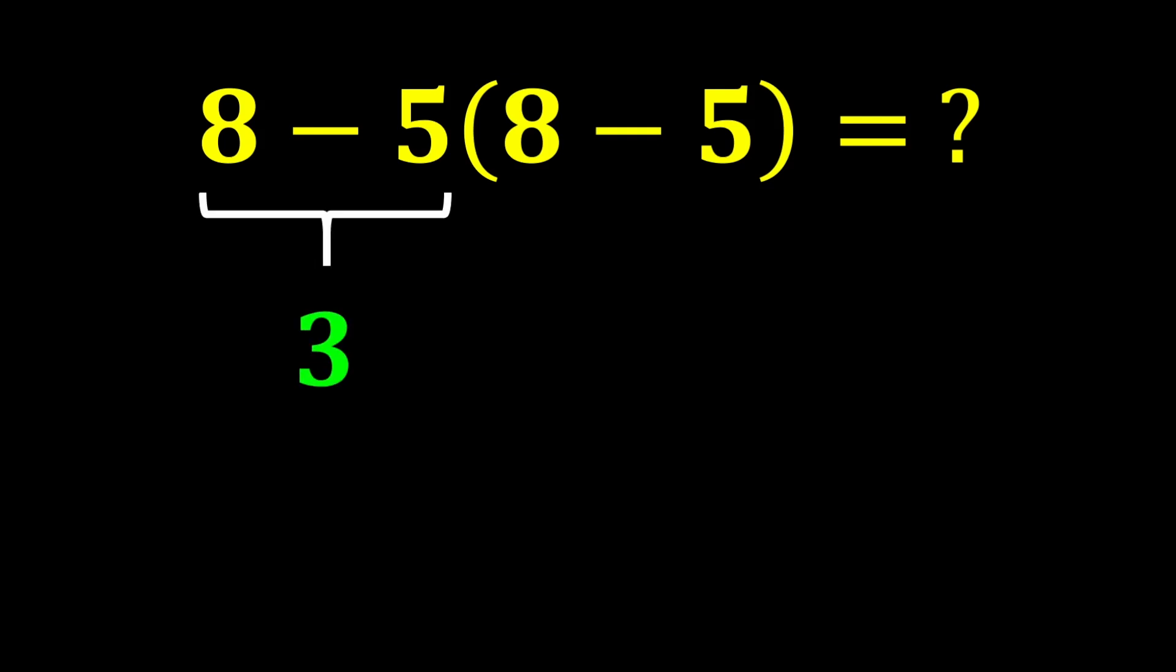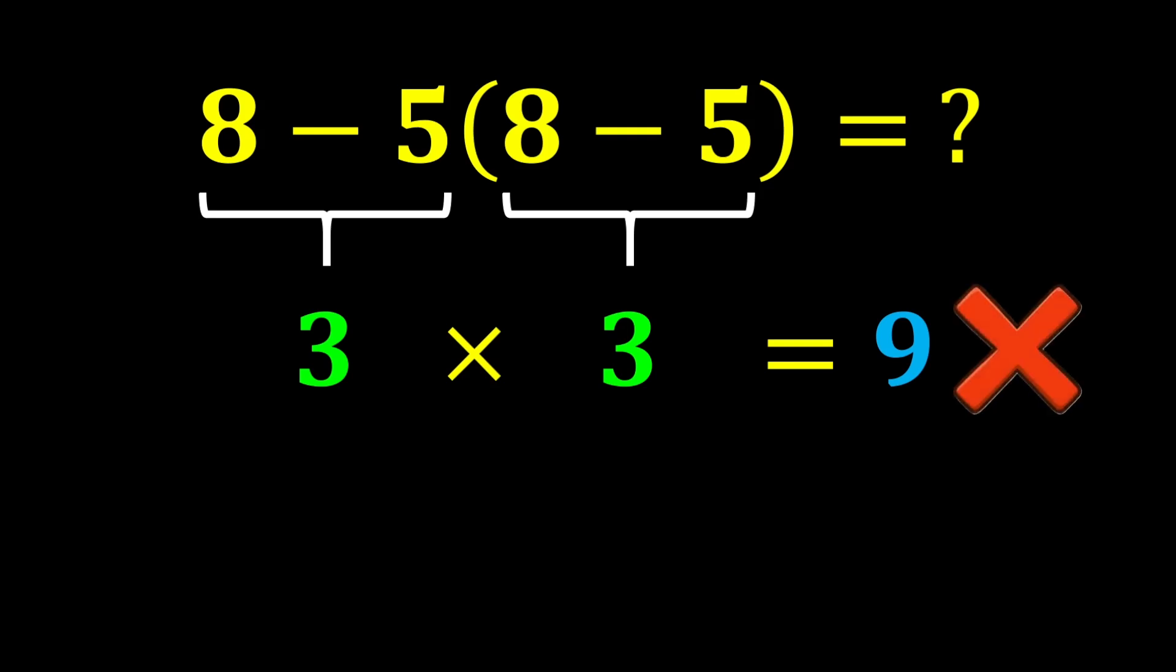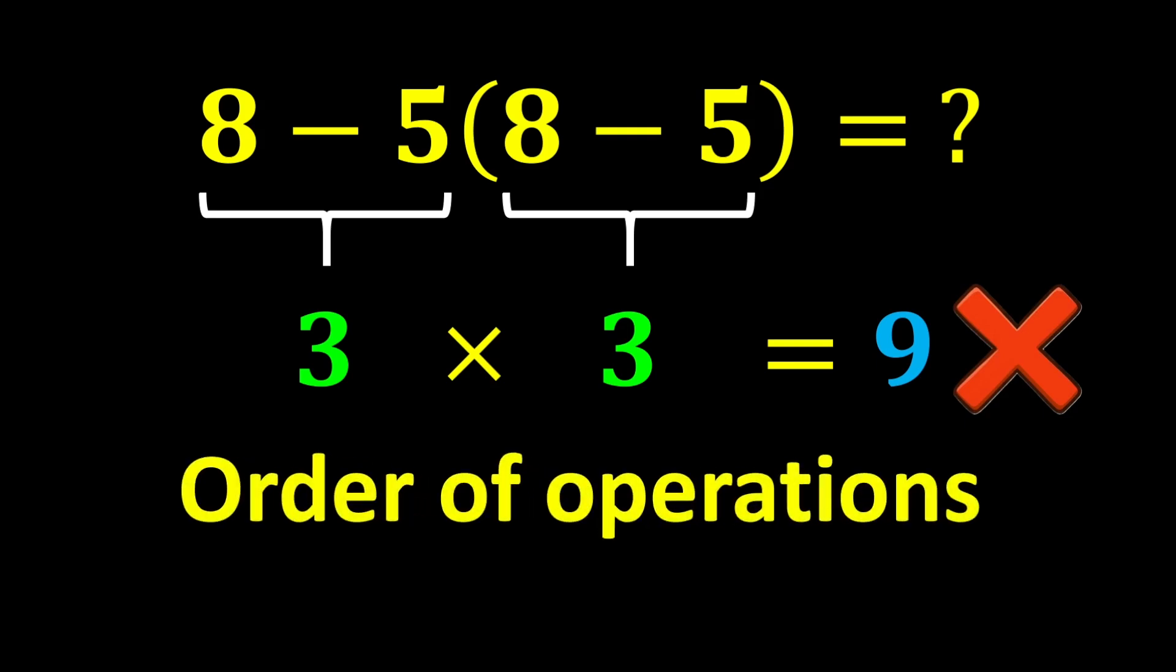8 minus 5 gives us 3. And again inside the parentheses, 8 minus 5 gives us 3. In the end, 3 multiplied by 3 gives us 9, and our final answer is 9. But this answer is not correct because we did not follow one of the most important rules of mathematics. This rule is called the order of operations.